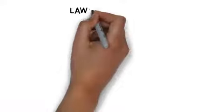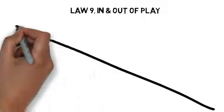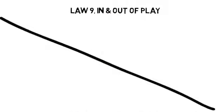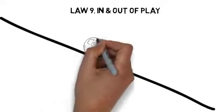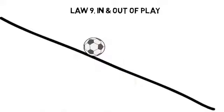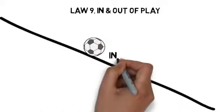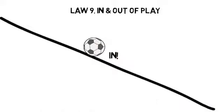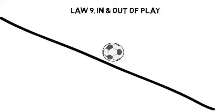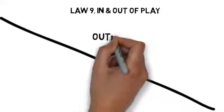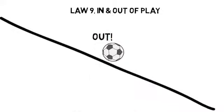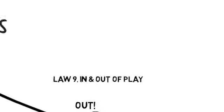Law 9: in and out of play. The ball is out of play when it has completely left the field. If the ball is touching the touchline in the air or on the ground, it is still considered in play. The referee and goalposts are fixtures of the field, and play resumes if the ball hits any part of the fixtures.